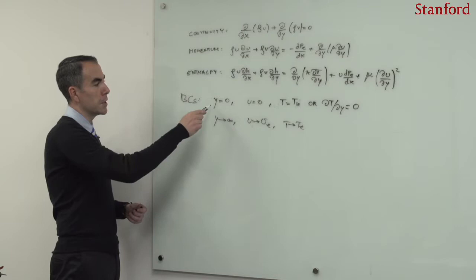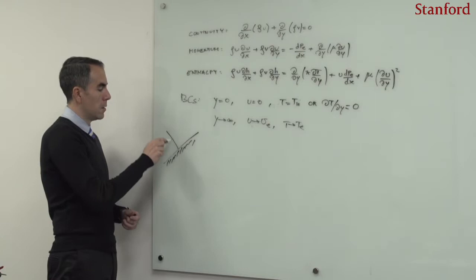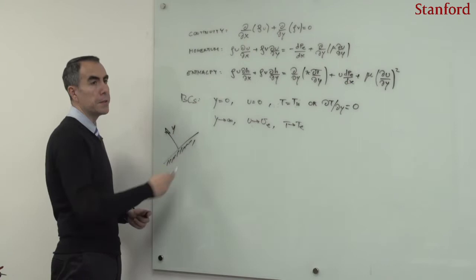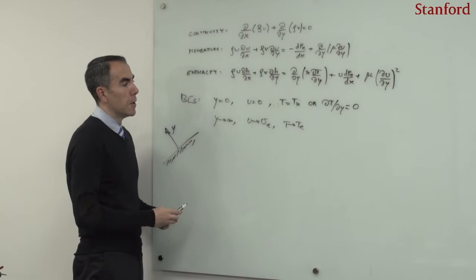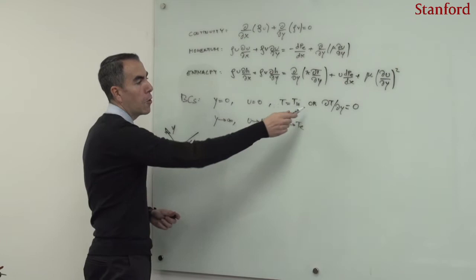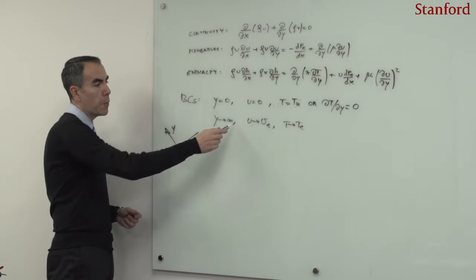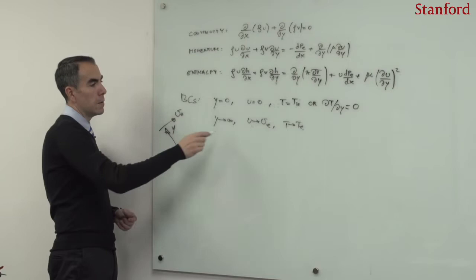For instance, at the surface of the plate — if this is the plate and this is the wall-normal axis — the boundary condition is that the velocity needs to be zero, and the temperature needs to be equal to a wall temperature, or the gradient of the temperature needs to be zero if the wall is adiabatic. Far away from the wall, the velocity needs to recover the edge velocity, and the temperature needs to be equal to the edge temperature.